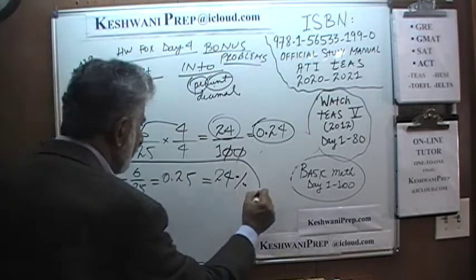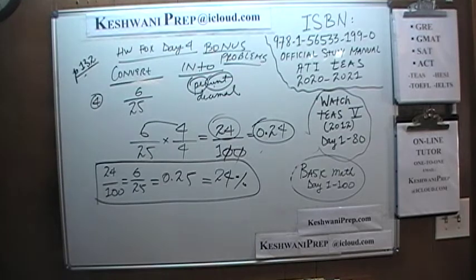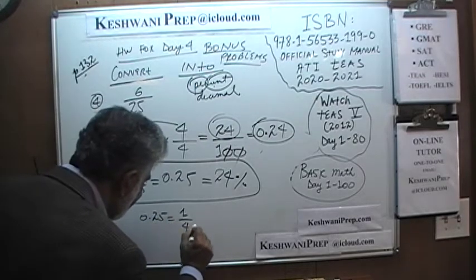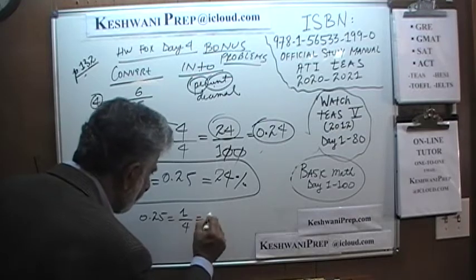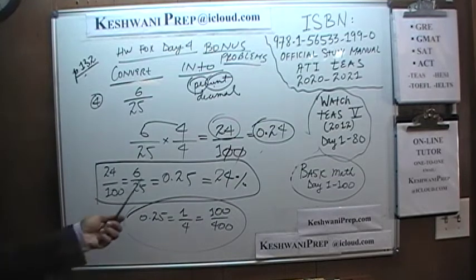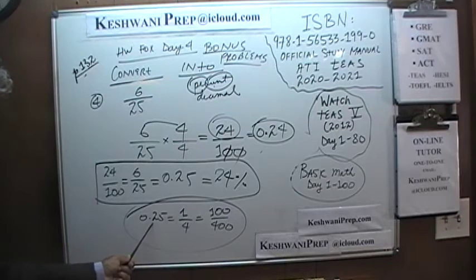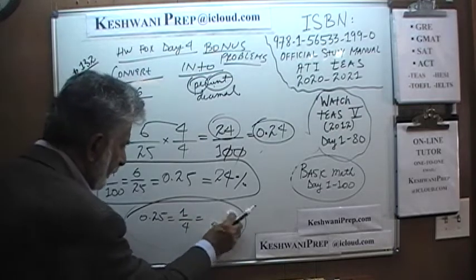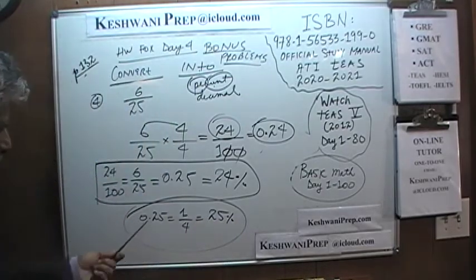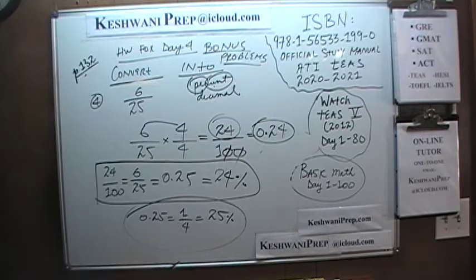They are all the same quantities — 0.24, 24%, and 6 over 25 are all equal to each other, just like 0.25 equals 1 quarter equals 25 over 100. Same exact idea. That was number 4.